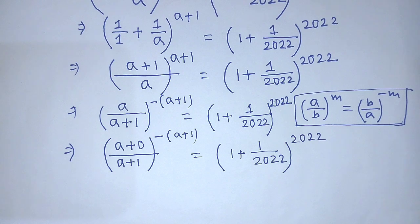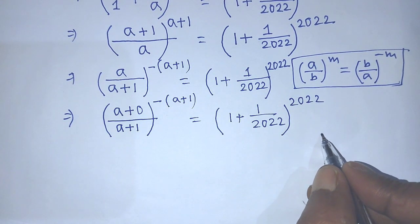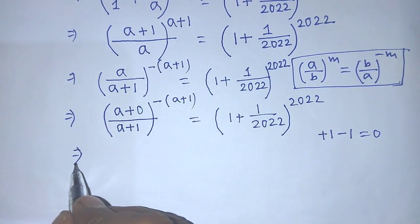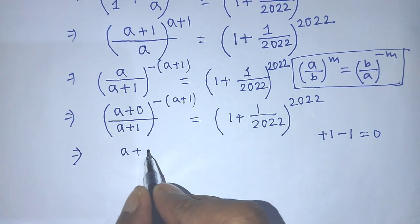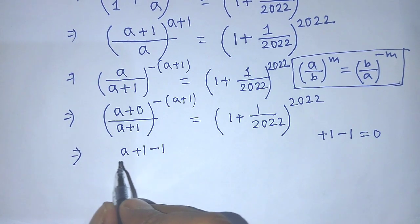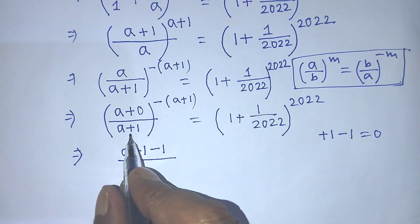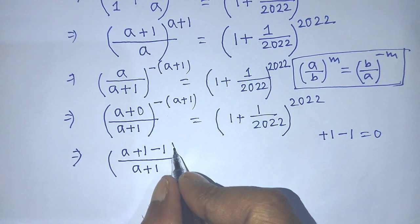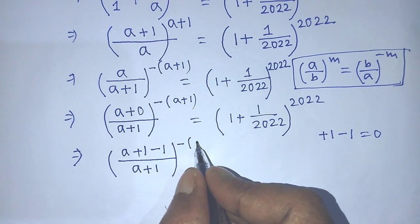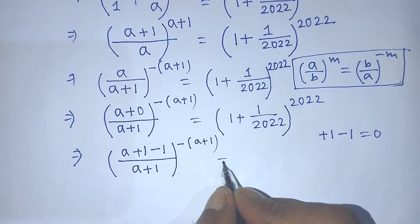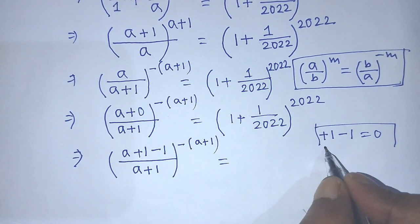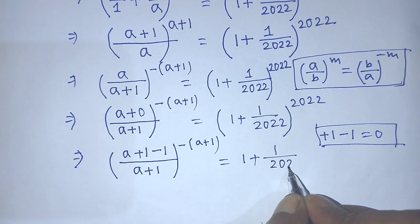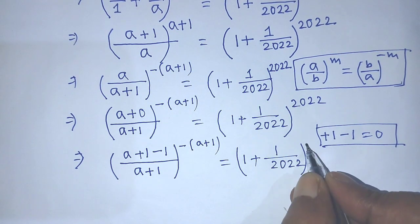We know that +1 and -1 equals 0. So in place of 0 in the numerator, we write +1 - 1, keeping a+1 in the denominator and the power as -(a+1), equal to (1 + 1/2022)^2022 on the right hand side.